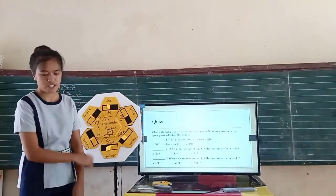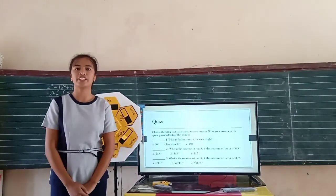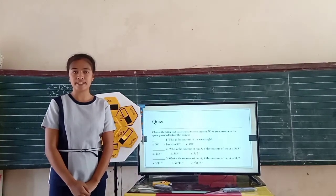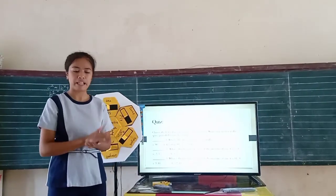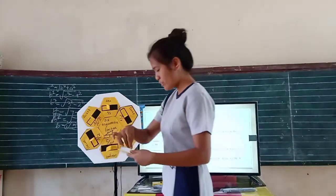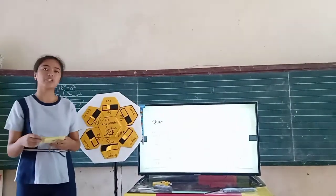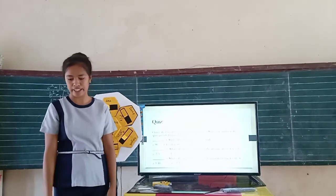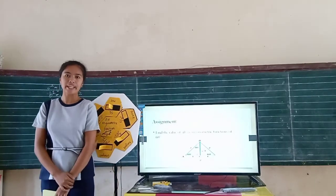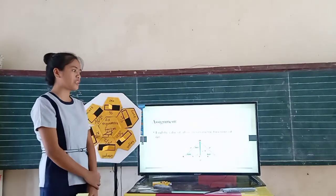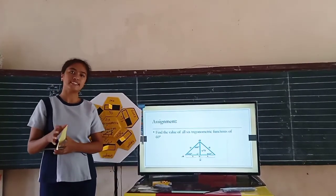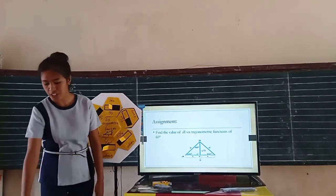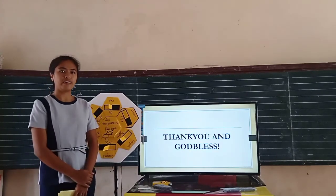Let's now proceed to our quiz. Bring out one piece of paper. I will give you two minutes to answer. Your time starts now. Okay, finish or not finish, pass your paper. Ten, nine, eight, seven, six, five, four, three, two, one. I will check your paper and your score will be recorded. For your assignment, find the value of all six trigonometric functions of 60 degrees. Do you have any questions, class? None. That's all for today. Thank you and God bless.